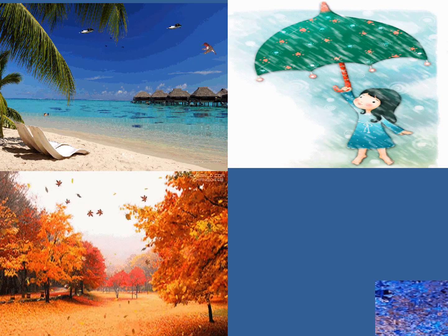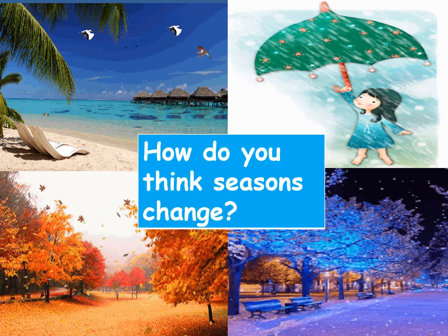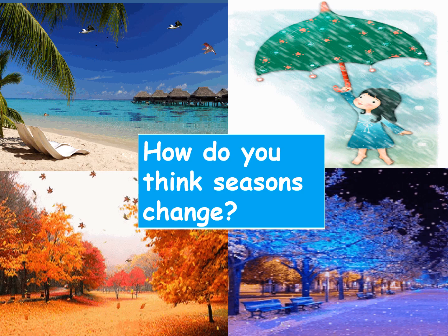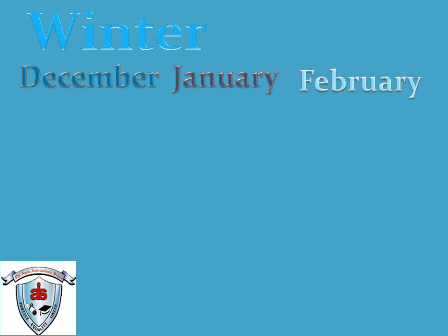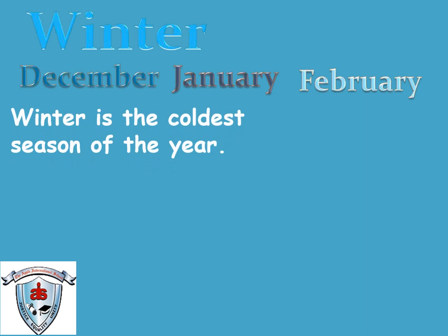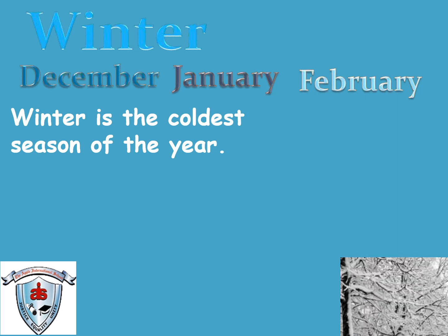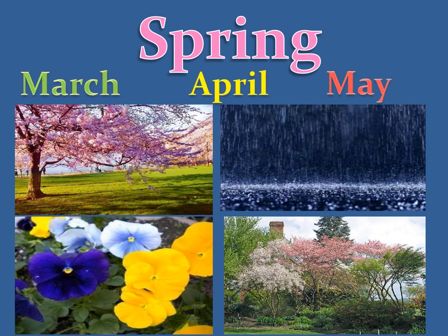Look at these. What are these, children? Yes, these are the four seasons. How do you think seasons change? The winter season comes in December, January, and February. When you are on the part that is leaning away from the sun, it is cold there and days are short — this season is called winter. Spring season comes in March, April, and May. We can see lots of butterflies, bees, and flowers in this season.